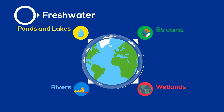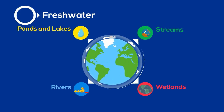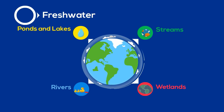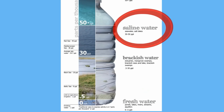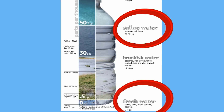Plants and animals in these freshwater biomes are adapted to the low salt content in freshwater and are unable to survive in areas of high salt concentration. Salt water is 30-50 parts per thousand salt to water, whereas freshwater is only 0.5 parts.